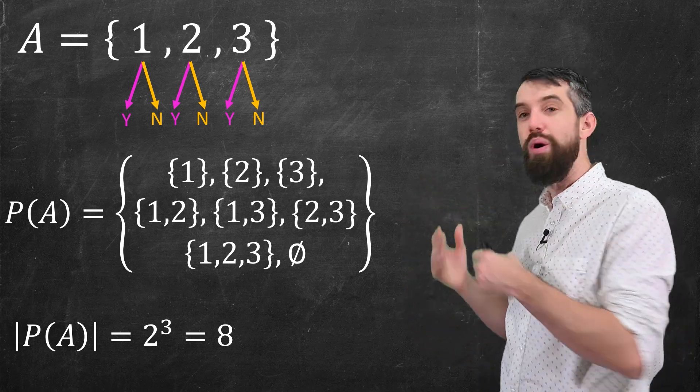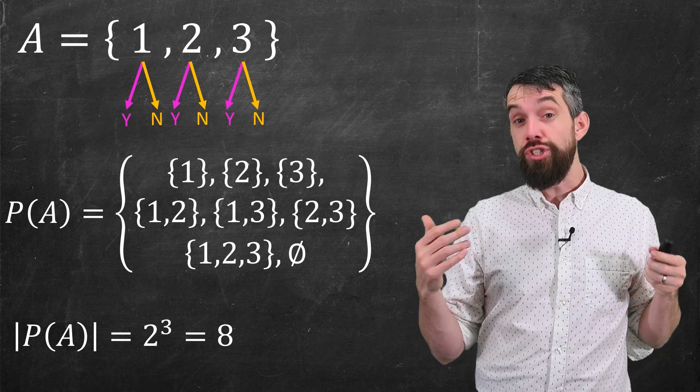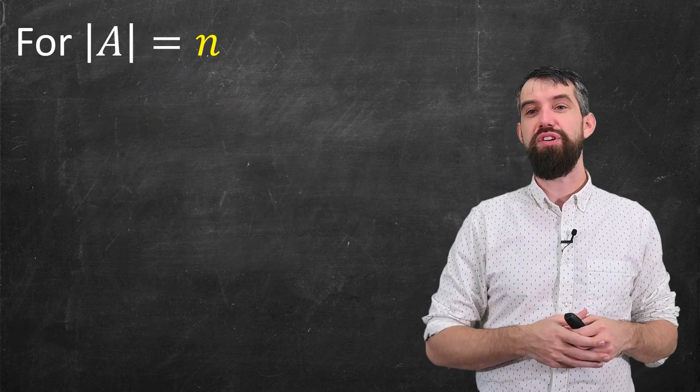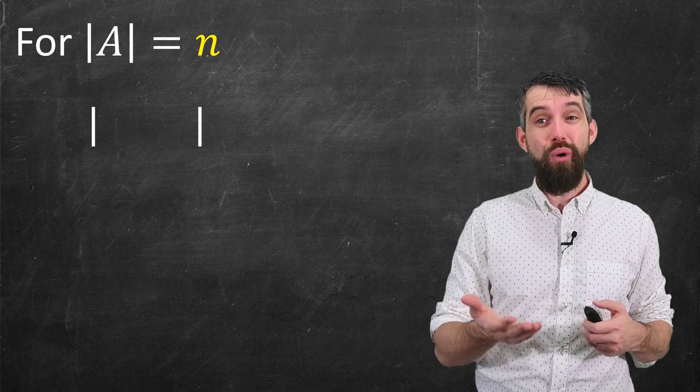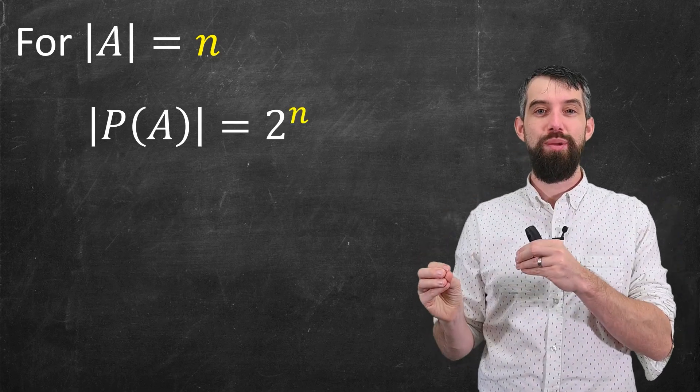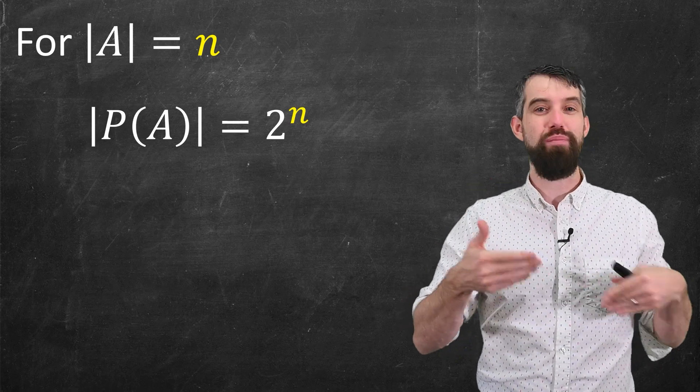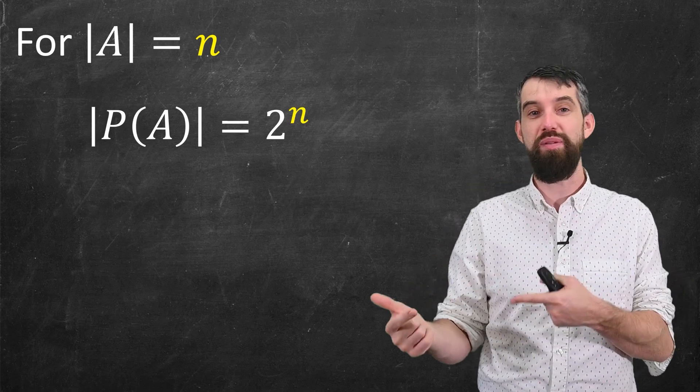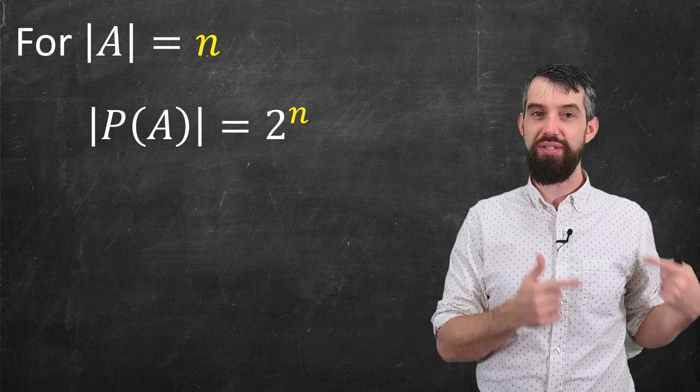which indeed is what we have seen previously. More generally, if the size of your set A is n, then the power set of A, its size is two to the power of n. Because for each of the n elements in A, there's two different possibilities as to whether or not they're going to be in a particular subset of the power set of A.